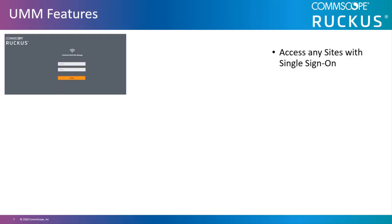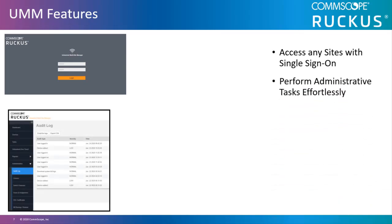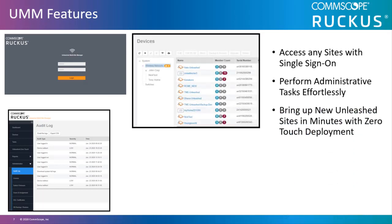Here are some of the major UMM key features. You can access any site with single sign-on — log into the Unleashed dashboard of any individual site securely without logging in again to that individual site. You can also perform key administration tasks such as upgrading Unleashed networks, creating role-based access, and managing SSL certificates with the click of a mouse.